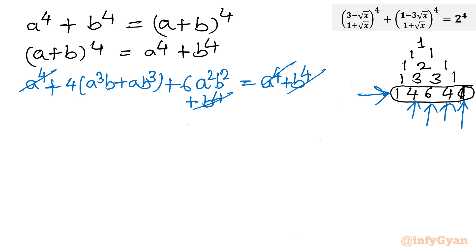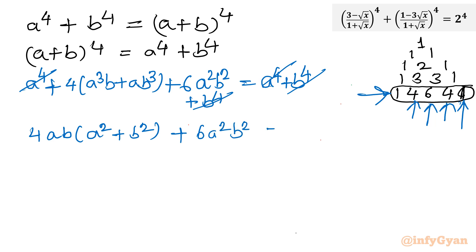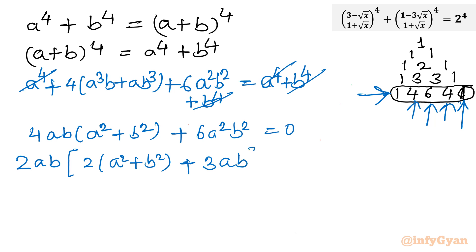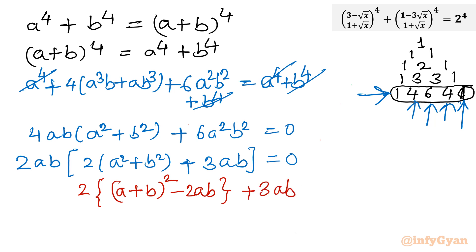What is left? I take 4ab common, so in the bracket I write (a² + b²) + 6a²b². Now you can see 2ab is common from the complete bracket. So I write 2ab common, then what is left is (2a² + b²) + 3ab, equal to 0. Now I will use the algebraic identity — that is (a plus b) whole square — and write 2 times (a plus b) whole square, minus 2ab plus 3ab. Right hand side is 0.